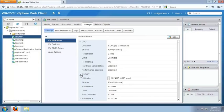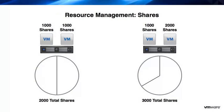To better understand shares, let's look at an illustration. On the left side of the illustration, we have two VMs that are configured the same and have the default CPU share allocation of 1000 shares. One VM is a test VM and the other is a production VM.